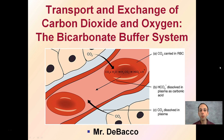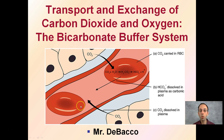Here we're going to look at the transport and exchange of carbon dioxide and oxygen. This occurs through the bicarbonate buffer system. When we're talking about carbon dioxide being carried in red blood cells in exchange for oxygen, that is what's occurring in the broad sense, but here we're going to look a little bit more at the molecular level to understand in greater detail what's actually occurring.